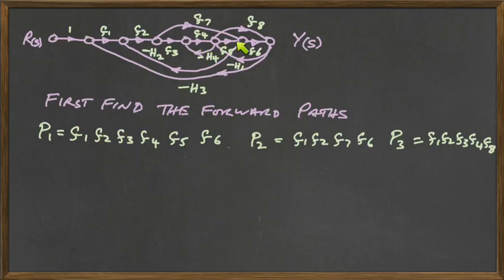So there is this straight through, and then there are these two other bypasses to give three possible forward paths to get from RS to YS.